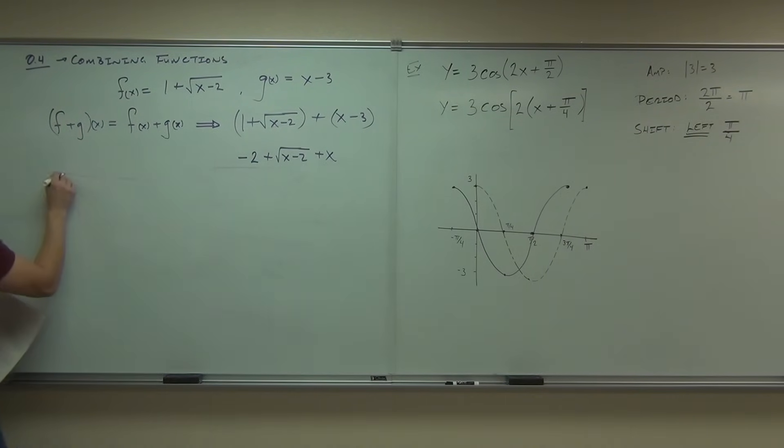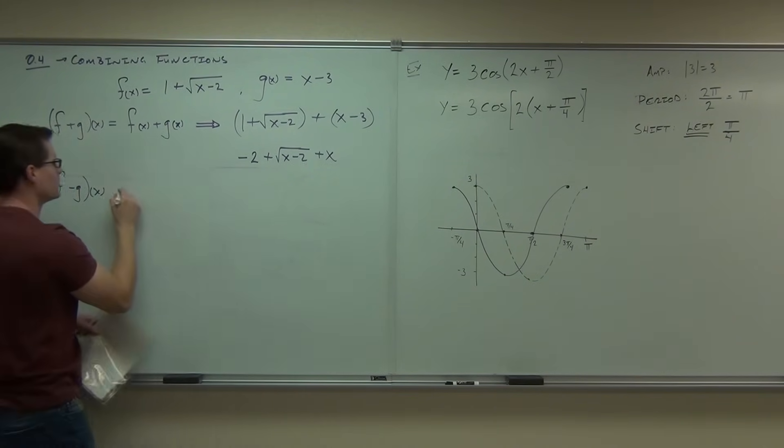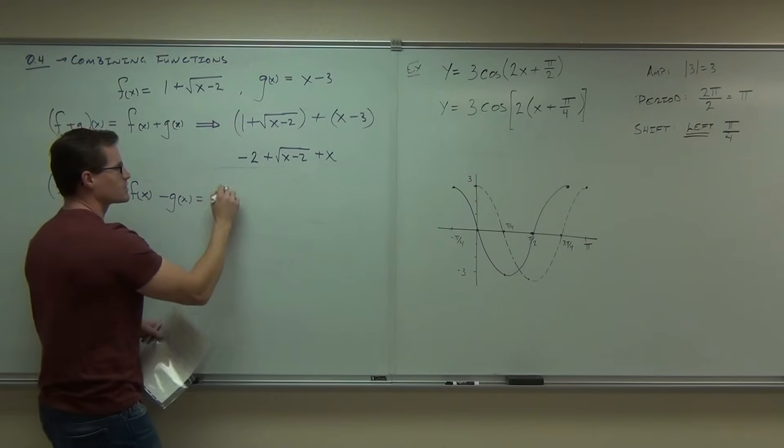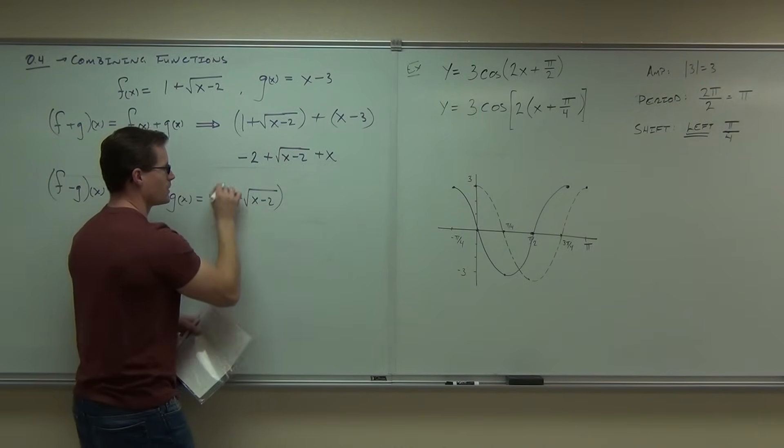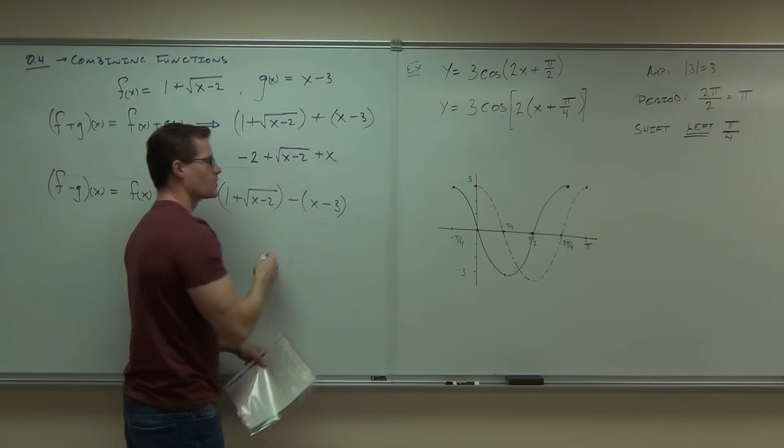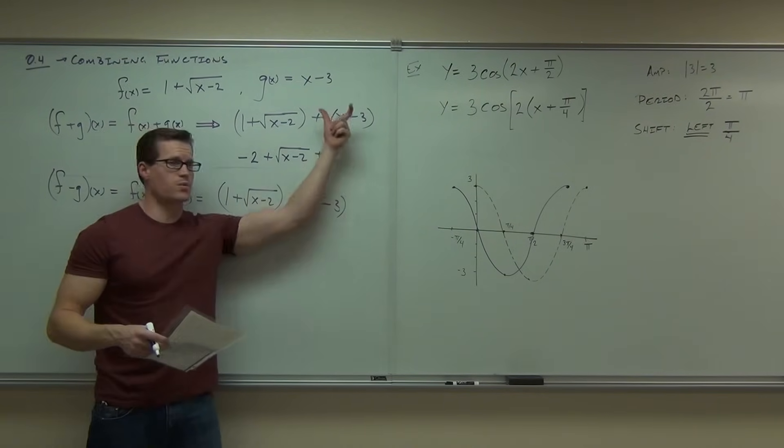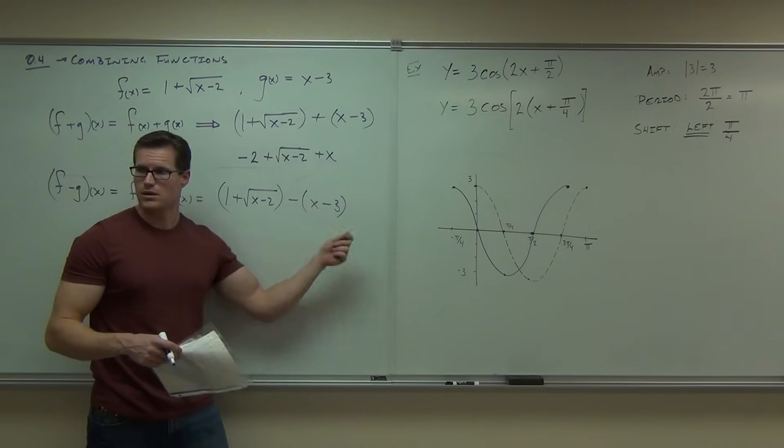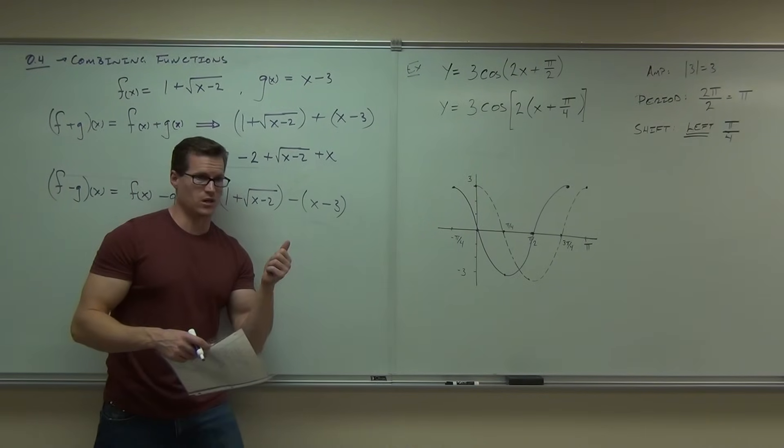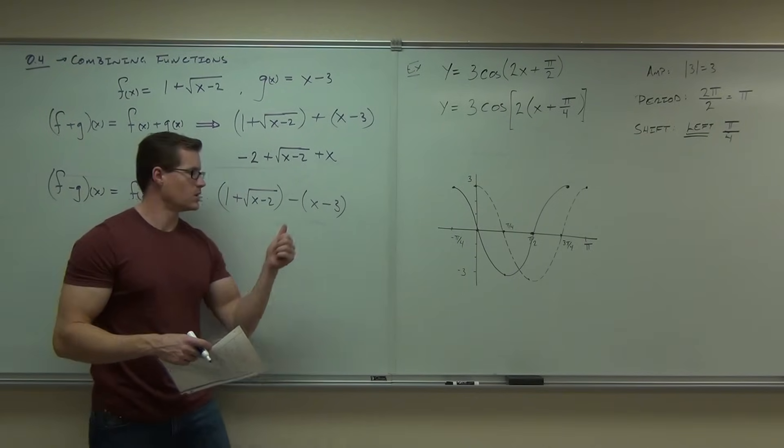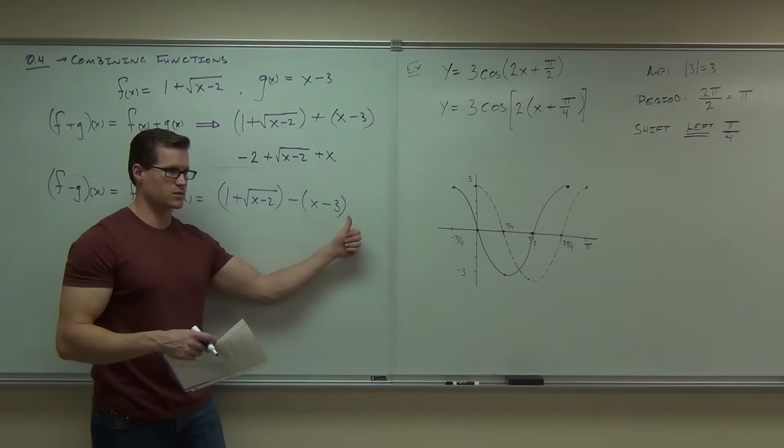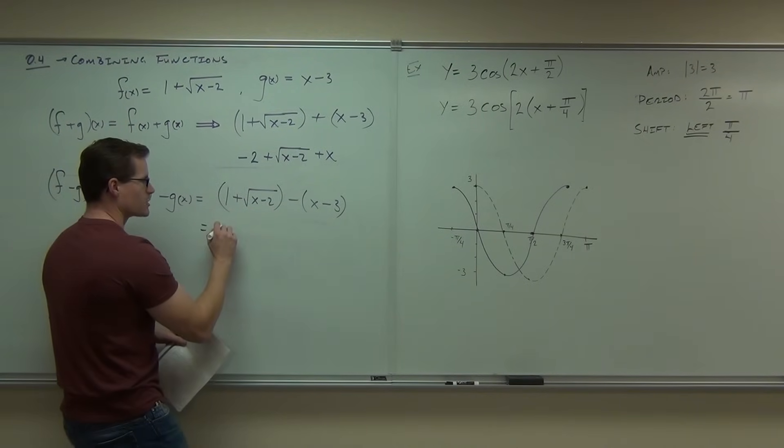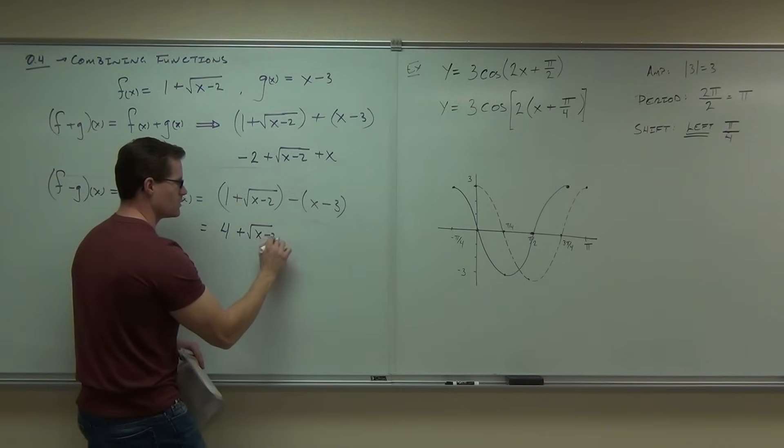You should be able to do things like f minus g of x, which is basically the same thing, except if you have a minus in the middle, you have to distribute a negative. You've been doing this stuff since basic algebra, which is why we're not going to spend a whole lot of time on it. In our case, we'd have 1 + √(x-2) - (x-3). Notice this is just a little different than the addition. With the addition, you can just drop parentheses because there's no negative to distribute. However, what happens to these sides? Those are definitely going to change. That's going to be minus x and then the plus 3. So our answer is going to be 4 + √(x-2) - x.